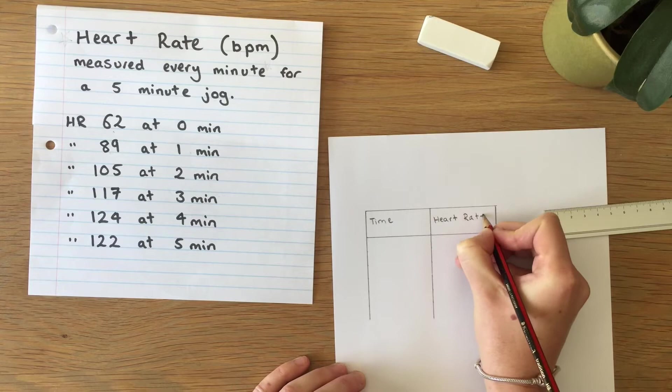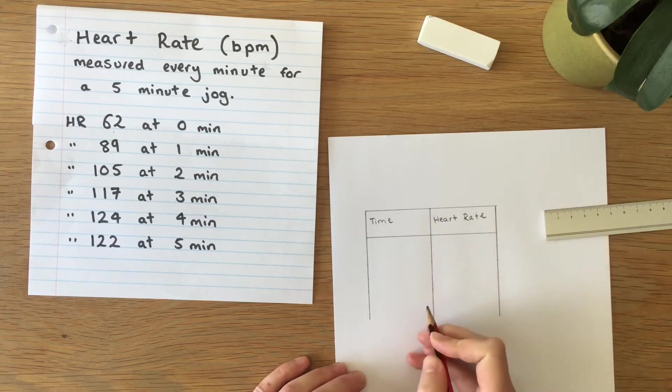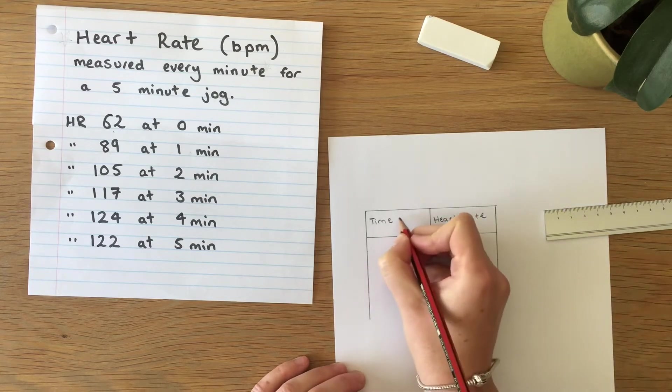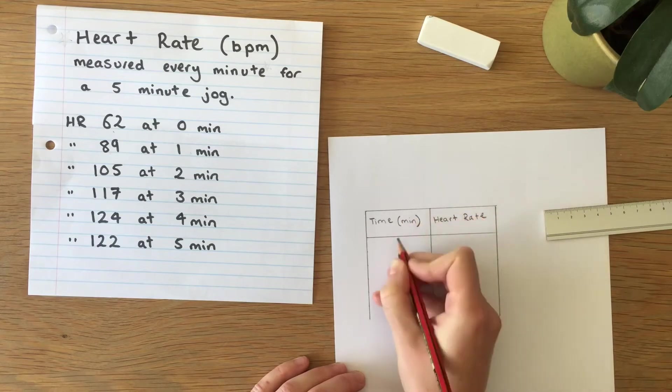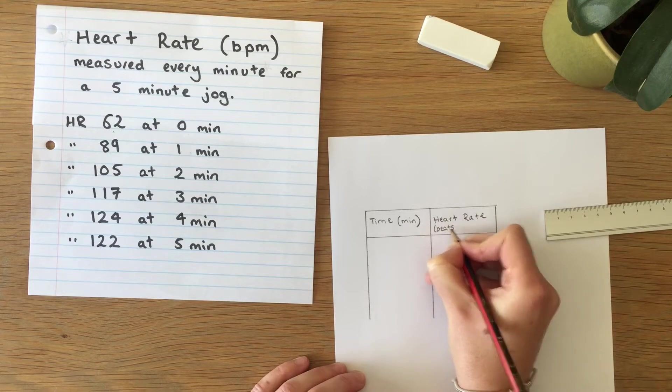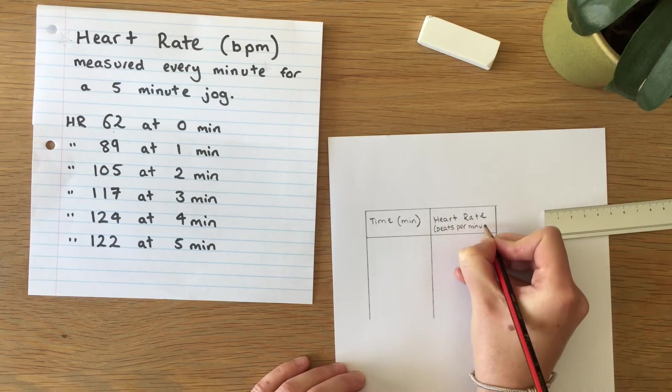Now what's missing in these two boxes at the moment are the units which are very important. So we're going to add minutes in brackets and beats per minute or BPM.